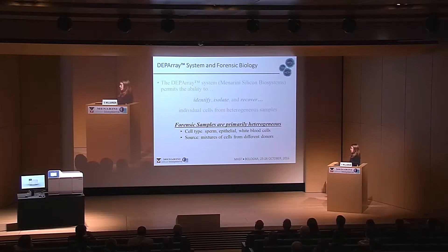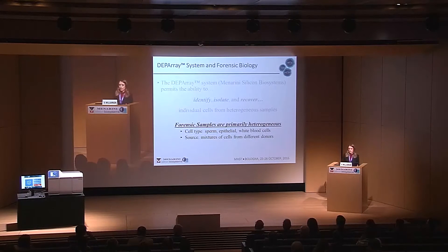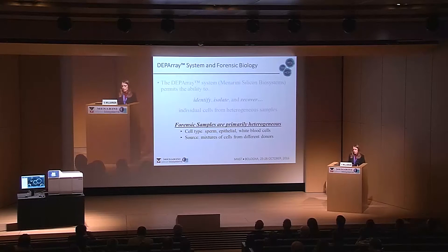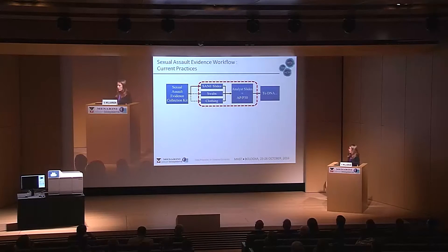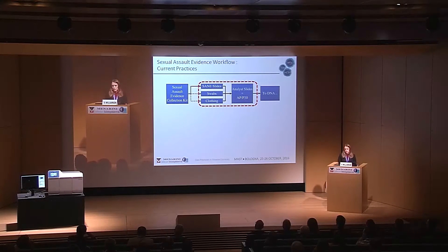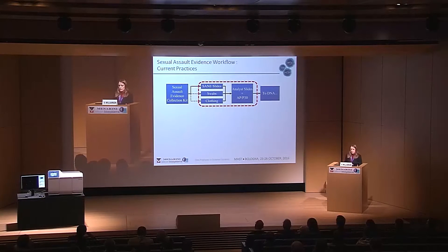Forensic samples are primarily heterogeneous — heterogeneous in cell type, from sperm to epithelial cell, or epithelial to white blood cell, or a mixture of all three components. They can also be heterogeneous in source type, from mixtures of cells from different donors. This heterogeneous nature of forensics can be seen in sexual assault cases.